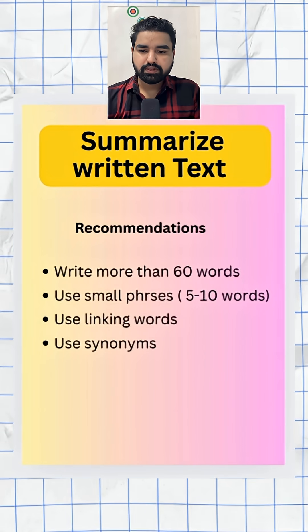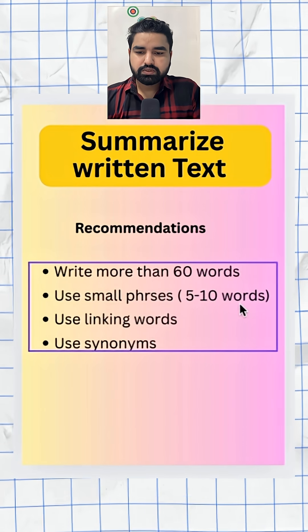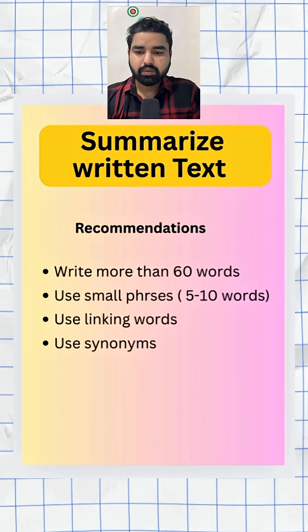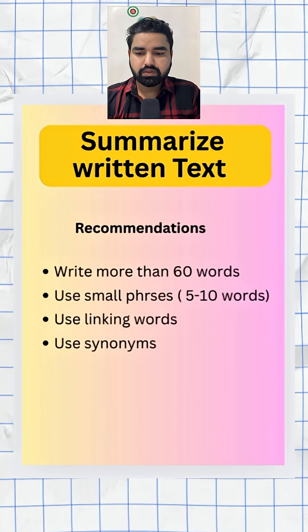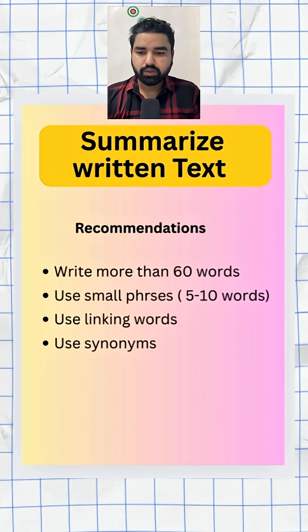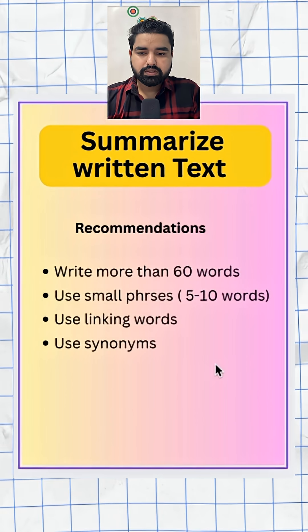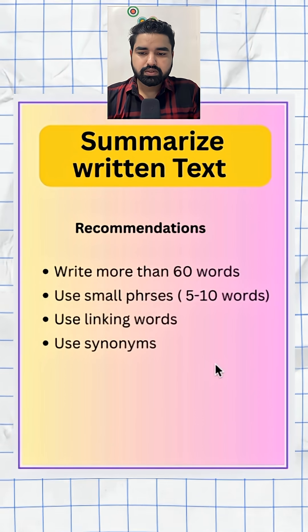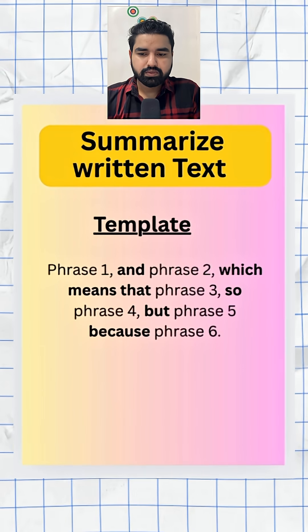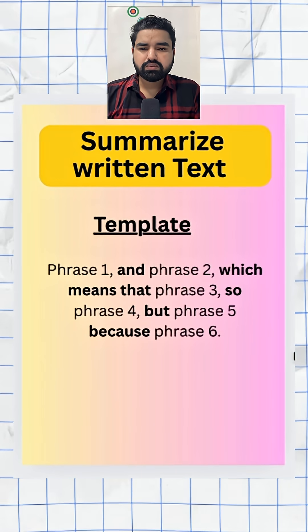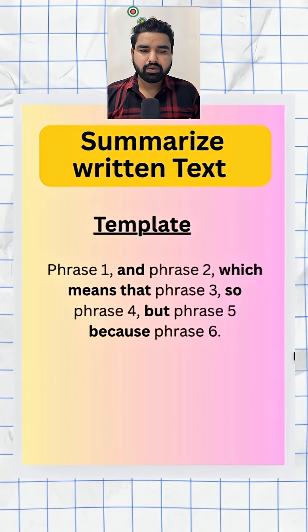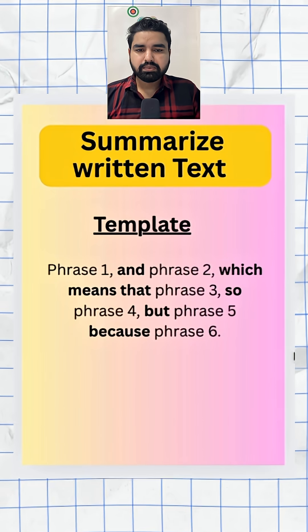There are a few recommendations. First, I want you to write more than 60 words and use small phrases. You can still use the copy-paste method, but try to make sure that you don't use lengthy phrases — pick small phrases of five to ten words. You can also use synonyms to make sure your answer looks paraphrased. Here is the template: use five to seven phrases and connect them with linking words.